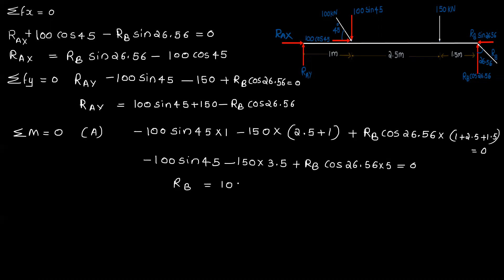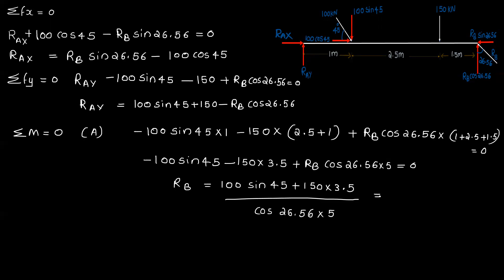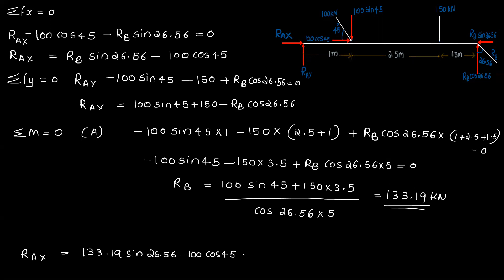Solving for RB: RB equals (100 sin 45 plus 150) into 3.5, divided by cos 26.56 into 5. That equals 133.199 kN. Then RAx equals RB sin 26.56 minus 100 cos 45, which equals minus 11.15 kN.